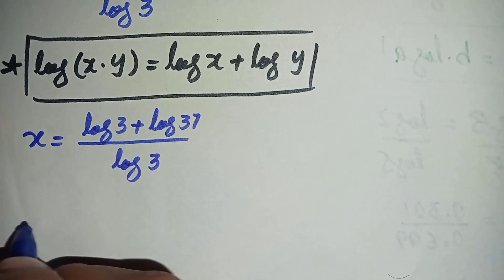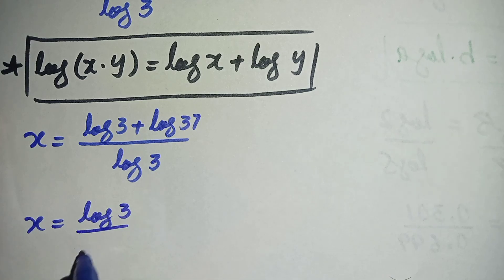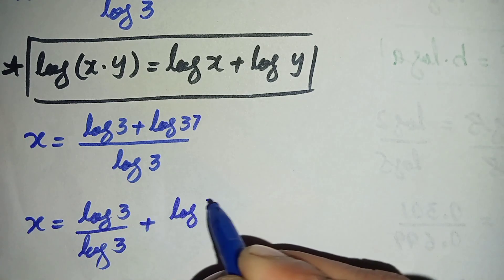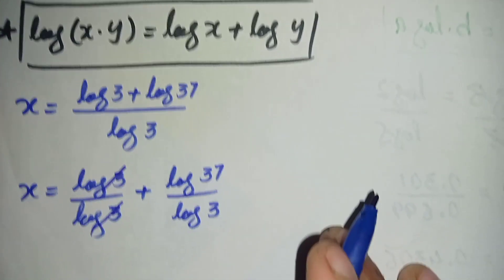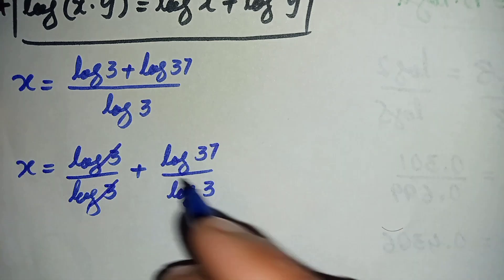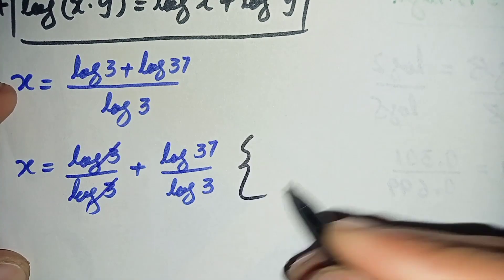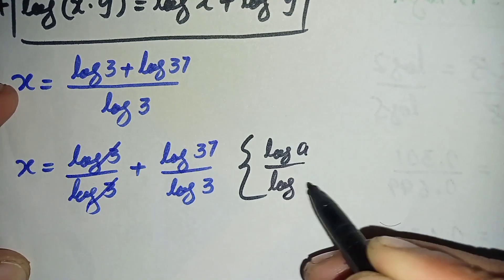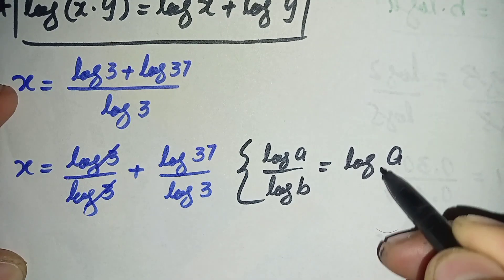So by using this log property, the equation will become x is equal to log of 3 plus log of 37, divided by log of 3. We can write this further as x is equal to log of 3 divided by log of 3, plus log of 37 divided by log of 3. Here we will use another log property: log of a divided by log of b can also be written as log of a with base b.